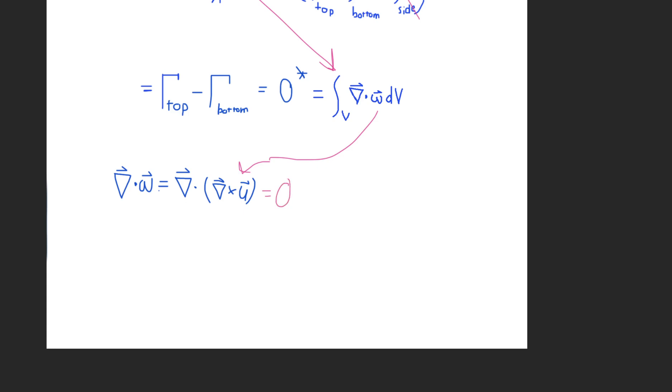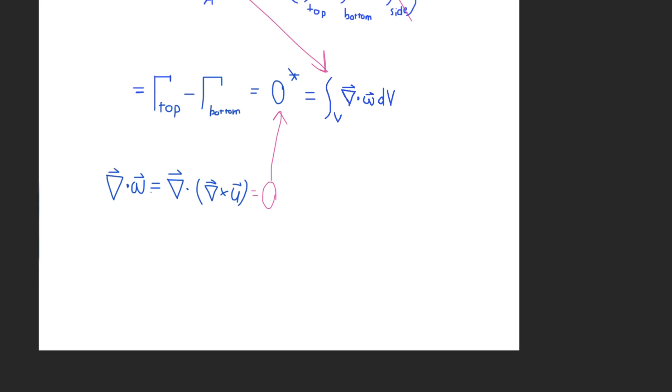So we'll say divergence of the curl equals zero. And this zero right here corresponds to the one that's up here. This is interesting because what we can do here is now we can say that the strength of the vortex tube at the top is just equivalent to the strength of the vortex tube at the bottom.